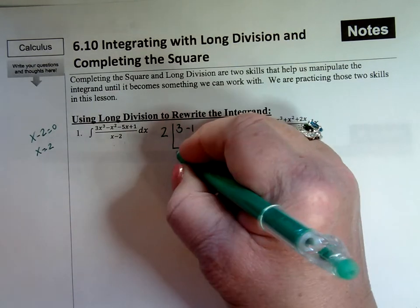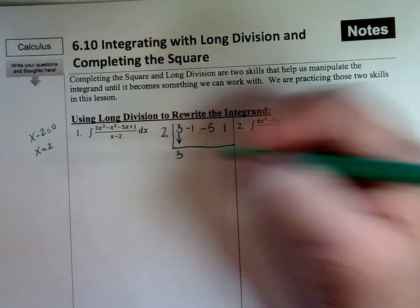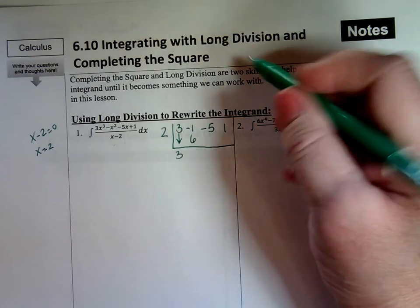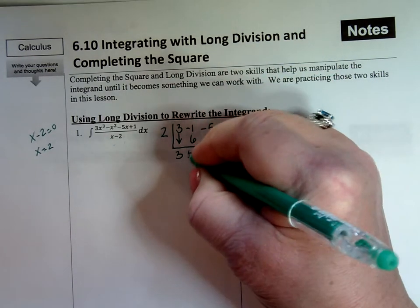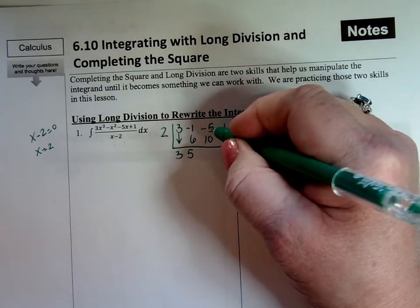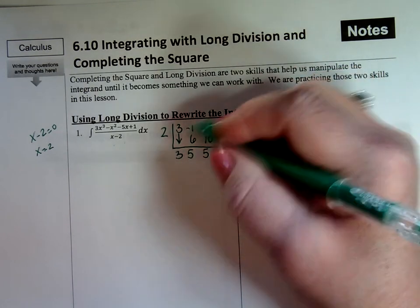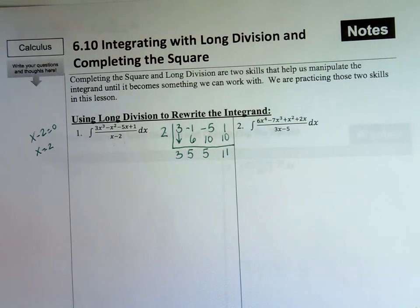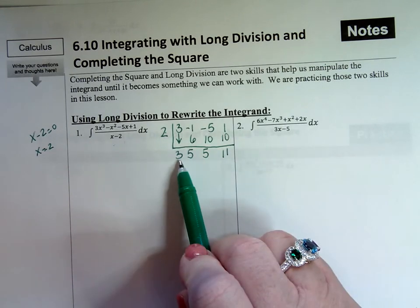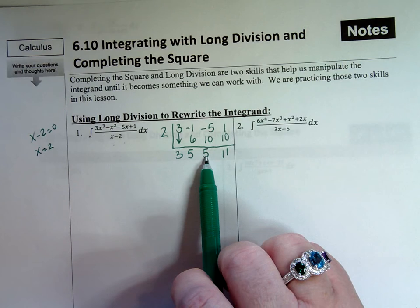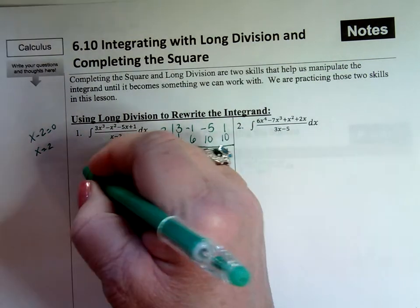Drop the 3 first. Then multiply: 2 times 3 is 6. Add: negative 1 plus 6 is 5. Then 2 times 5 is 10, negative 5 plus 10 is 5 again. Then 2 times 5 is 10, and 1 plus 10 gives me 11. So the result is a polynomial one less power than the original: 3x squared plus 5x plus 5, with a remainder of 11.